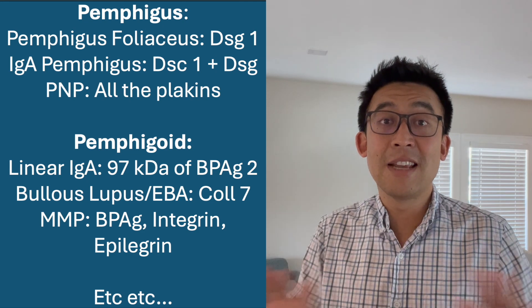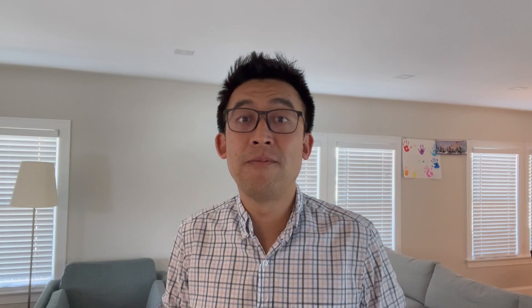So that's the down and dirty of how to tell the difference between pemphigus and pemphigoid. To review: pemphigus is S for superficial, so those are going to be flaccid blisters with a positive Nikolsky sign. And pemphigoid ends with D for deep, so those will have tense blisters with a negative Nikolsky sign. I hope that's helpful, and hopefully I'll be back soon with another video to try to help demystify skin disease. Thanks everyone.